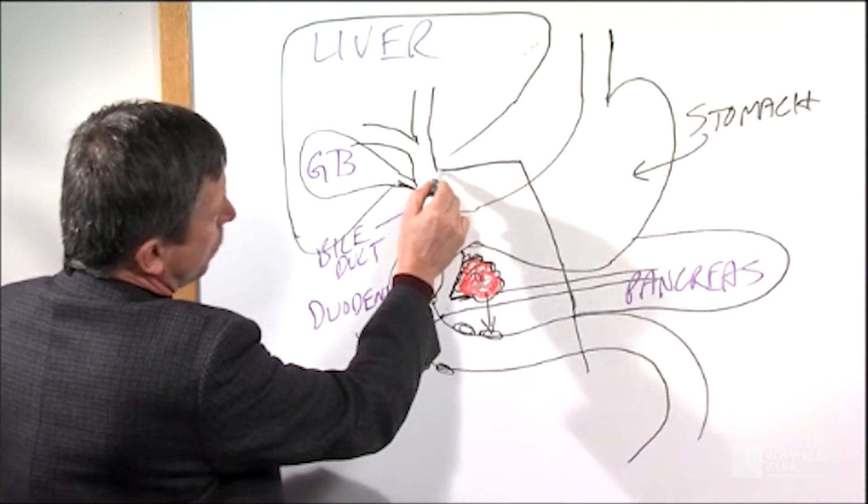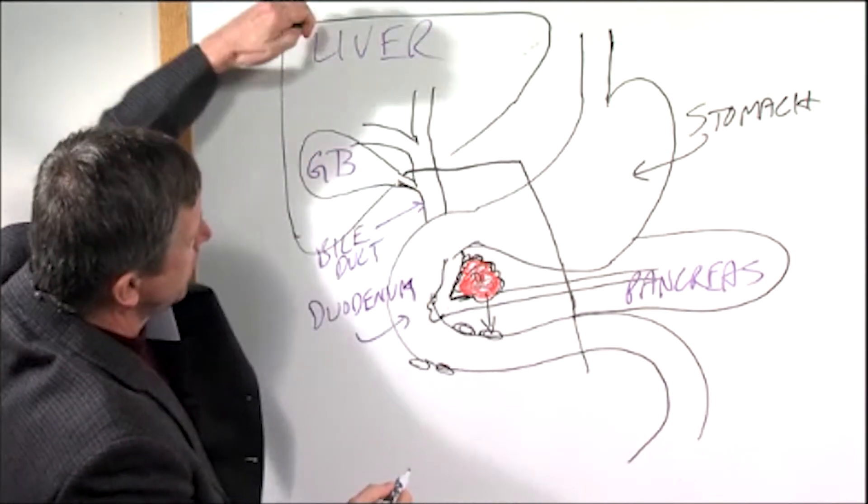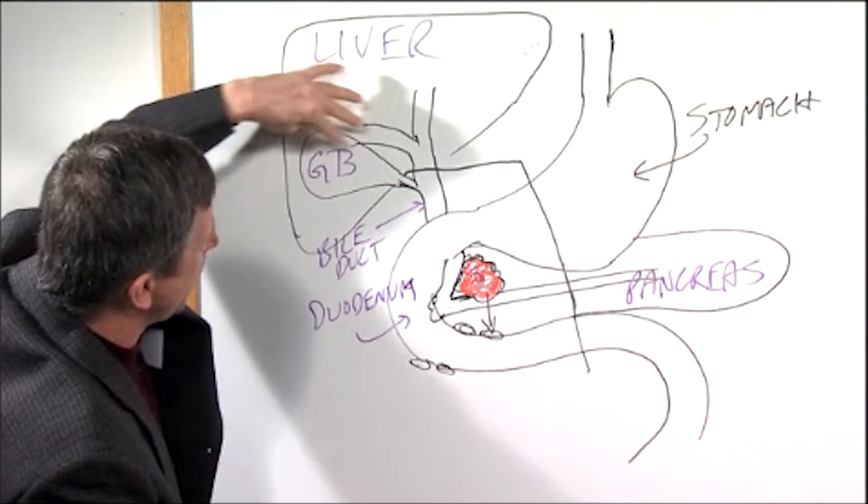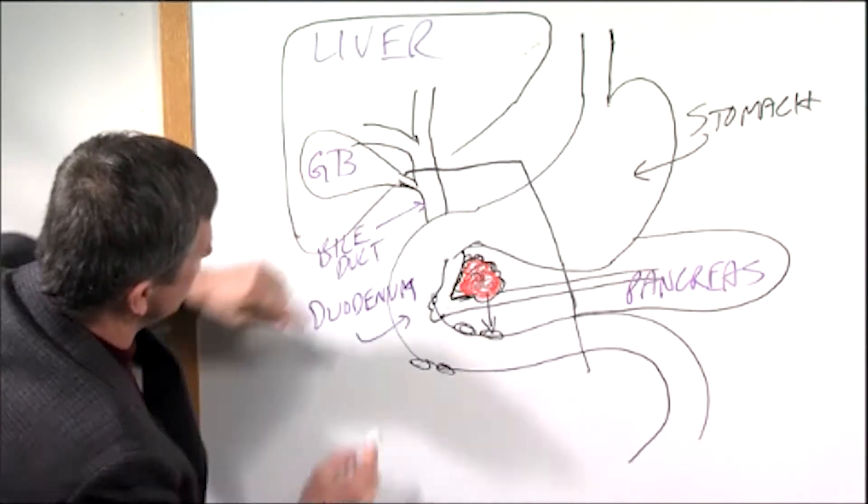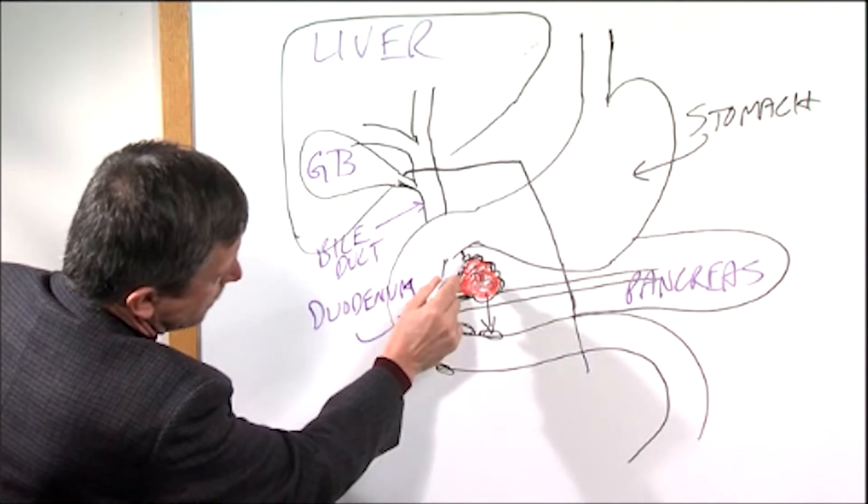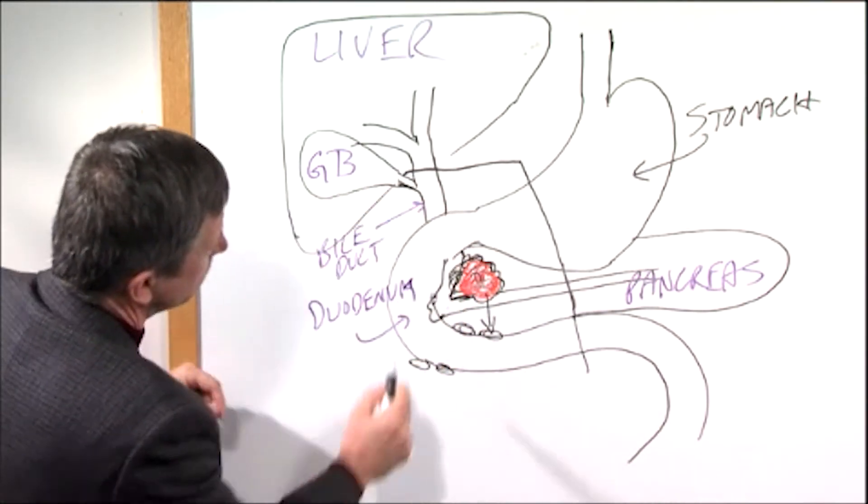We also come across the bile duct which carries the yellow bile from the liver. So all the bile that's produced by the liver comes down, is stored in the gallbladder, goes through the head of the pancreas, and you'll see here if there's a tumor that can cause blockage of the bile duct.